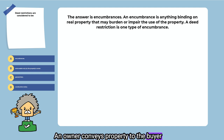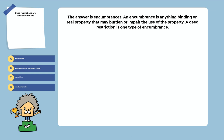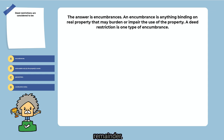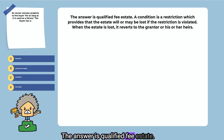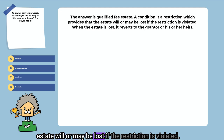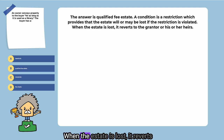An owner conveys property to the buyer for as long as it is used as a library. The buyer has a: leasehold, qualified fee estate, remainder, or fee simple. The answer is qualified fee estate. A condition is a restriction that provides that the estate will or may be lost if the restriction is violated. When the estate is lost, it reverts to the grantor or his or her heirs.